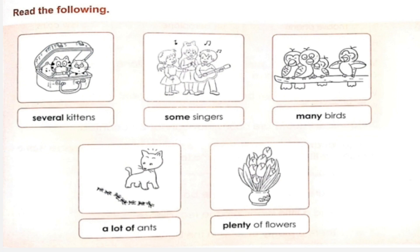For example: some singers, many birds, a lot of ants, several kittens — you can say 'several kittens' which tells you about quantity. So these words are known as quantifiers, which tell about quantity.